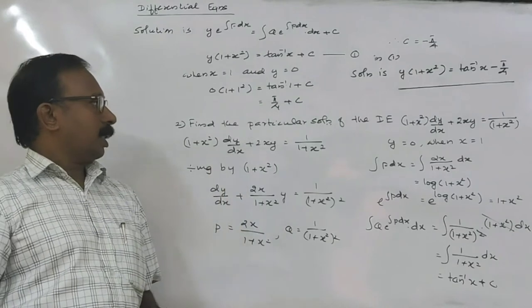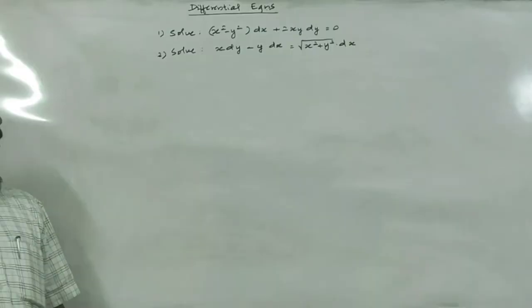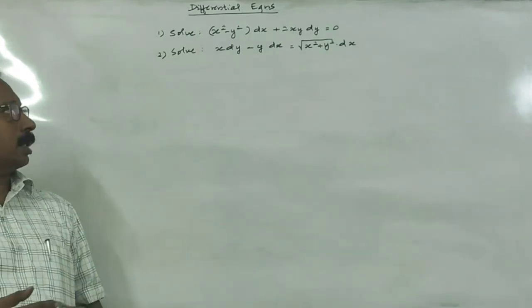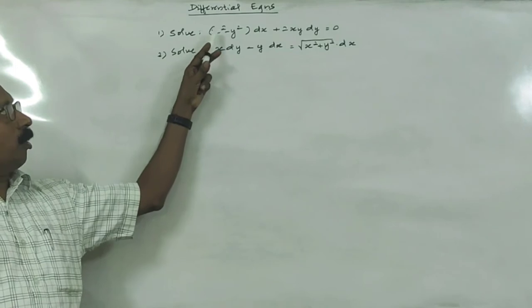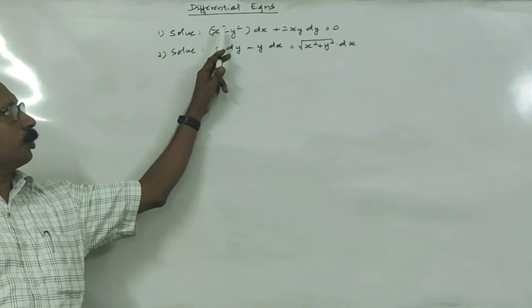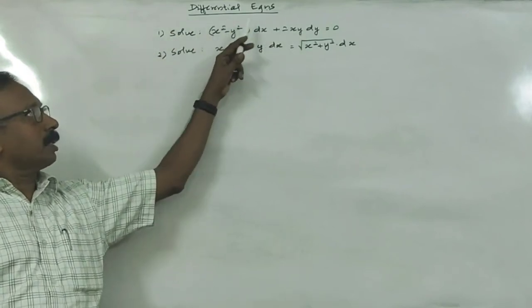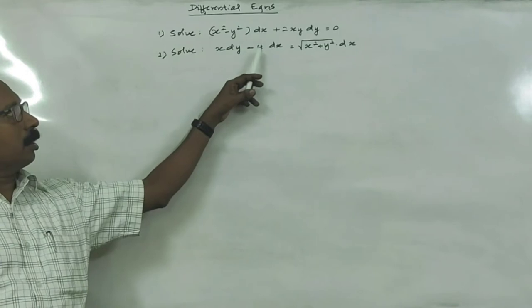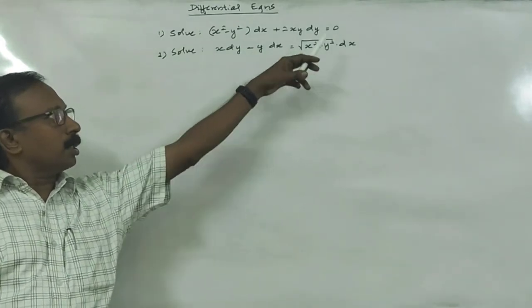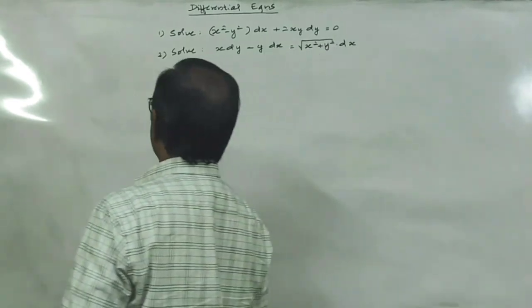Now we have two questions on homogeneous differential equations. In a homogeneous differential equation, the degree of each term is the same. For the first equation, the degree of x² is 2, y² is 2, and xy has degree 1 + 1 = 2. So each term has degree 2 — it is a homogeneous differential equation. In the second case, under the radical sign, degree 2 becomes degree 1 after taking the square root, making it homogeneous as well.